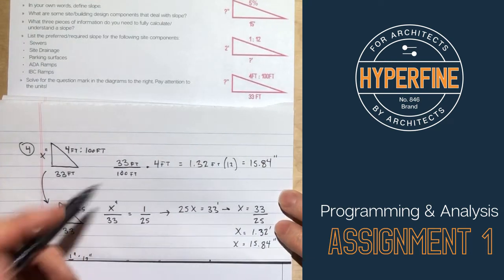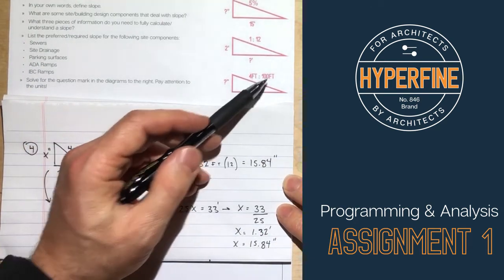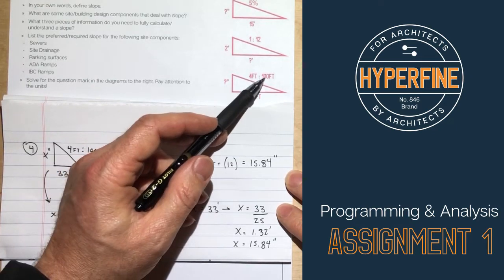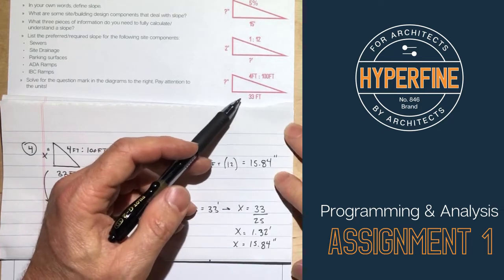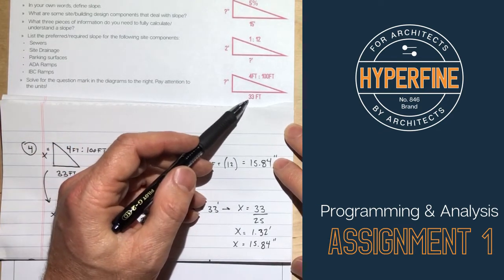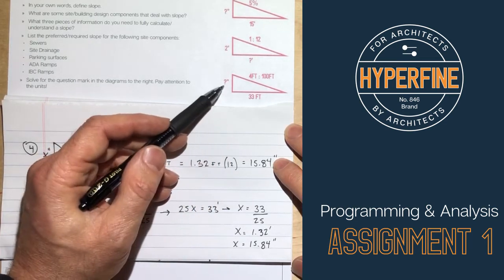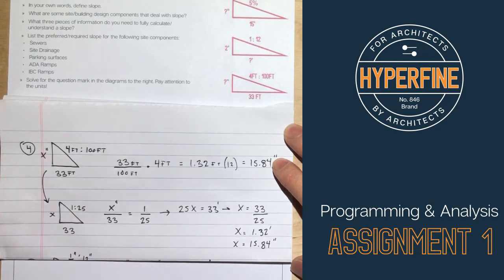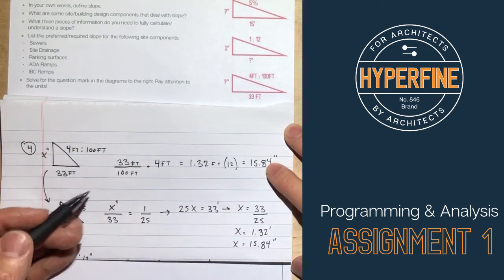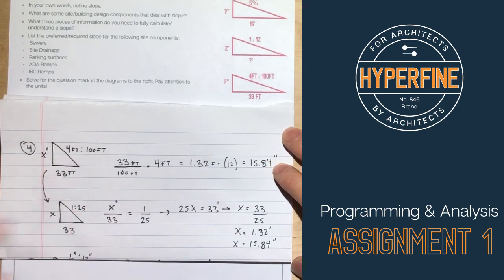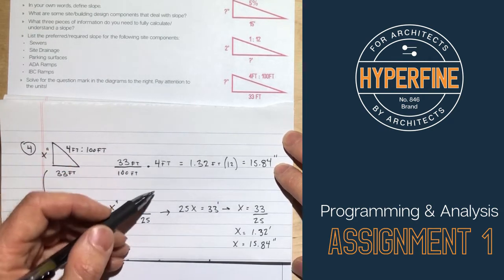All right, another way you could see the slope presented is in a value per 100 feet. So in this case, you've got a slope of 4 feet for every 100 feet. So that means for every group of 100 feet you have, you go up or down 4 feet. So in this question, I've got a run of 33 feet, and you're asked to find the rise in inches. And so the quickest way to set this one up is just figure out how many groups of 100 feet do you have.